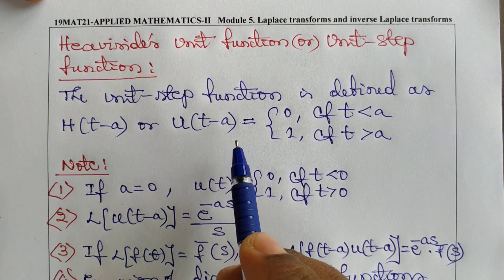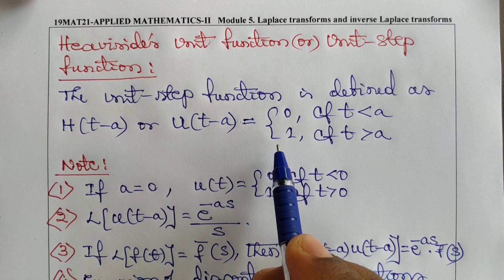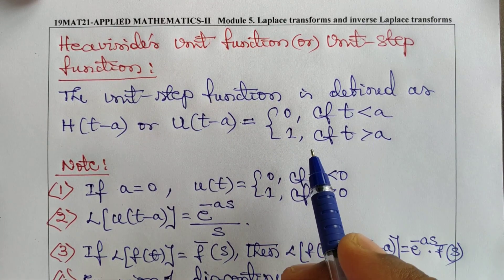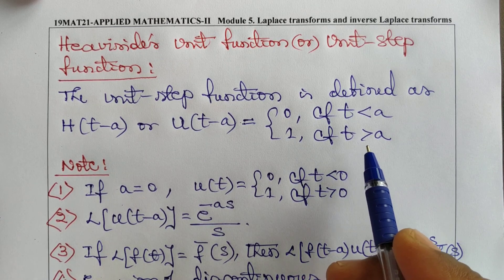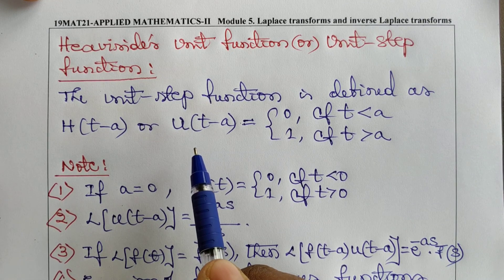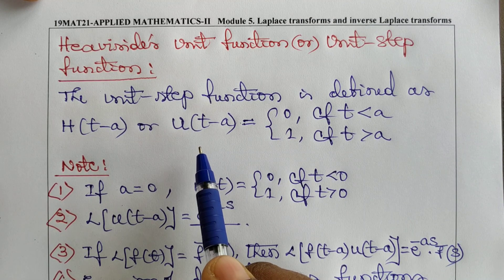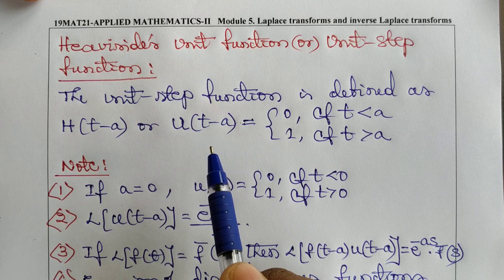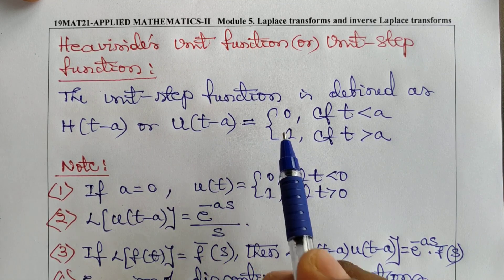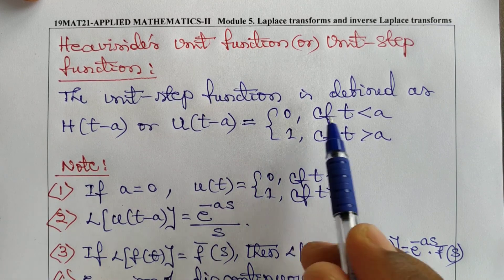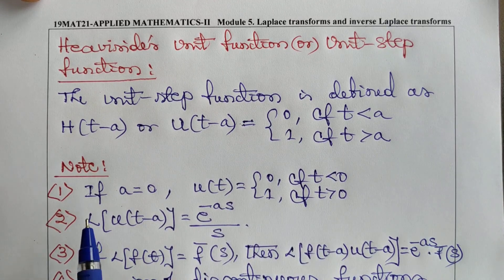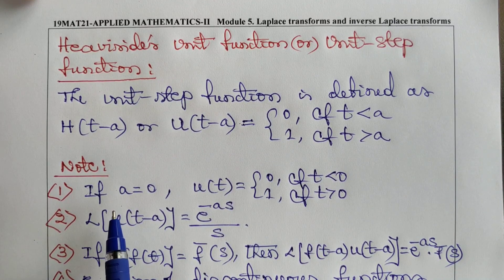h(t - a) or u(t - a) is equal to 0 if t < a, and 1 if t > a. Afterwards we can denote the Heaviside unit step function as h(t - a) or u(t - a), with the condition: 0 if t < a, 1 if t > a.